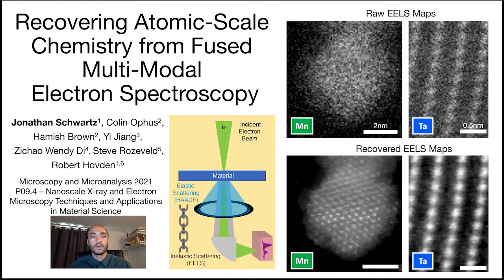We see the benefits on the right, where the EELS maps for the manganese and tantalum distributions are substantially improved, revealing the atomic structure that was previously hidden below the noise floor. Fused multimodal electron microscopy also recovers materials chemistry by accurately predicting relative concentrations for constituent elements. Researchers now can estimate local concentrations at near-atomic length scales with less than 10% error.